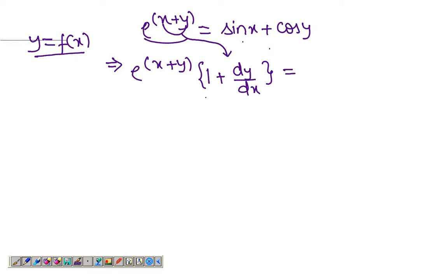That is nothing but implicit differentiation. It's so easy. The derivative of sin(x) with respect to x is simply cos(x). The derivative of cos(y) is negative sin(y), but using the chain rule again, inside you have a function of x, the derivative of that, which is dy/dx.